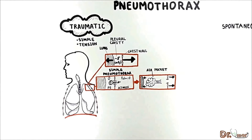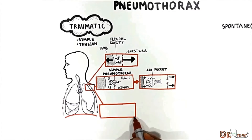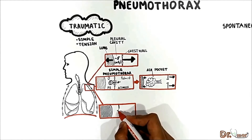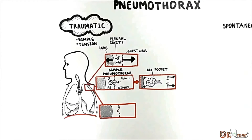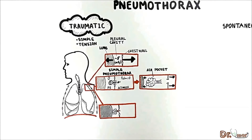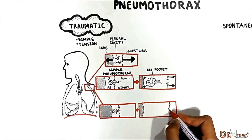In simple pneumothorax, air can flow in both directions, and the collapsed lung region acts as a pulmonary shunt. In some cases, tissue surrounding the chest opening may act as a one-way valve. During inspiration, air enters the pleural space, but during expiration it cannot leave because the valve closes.